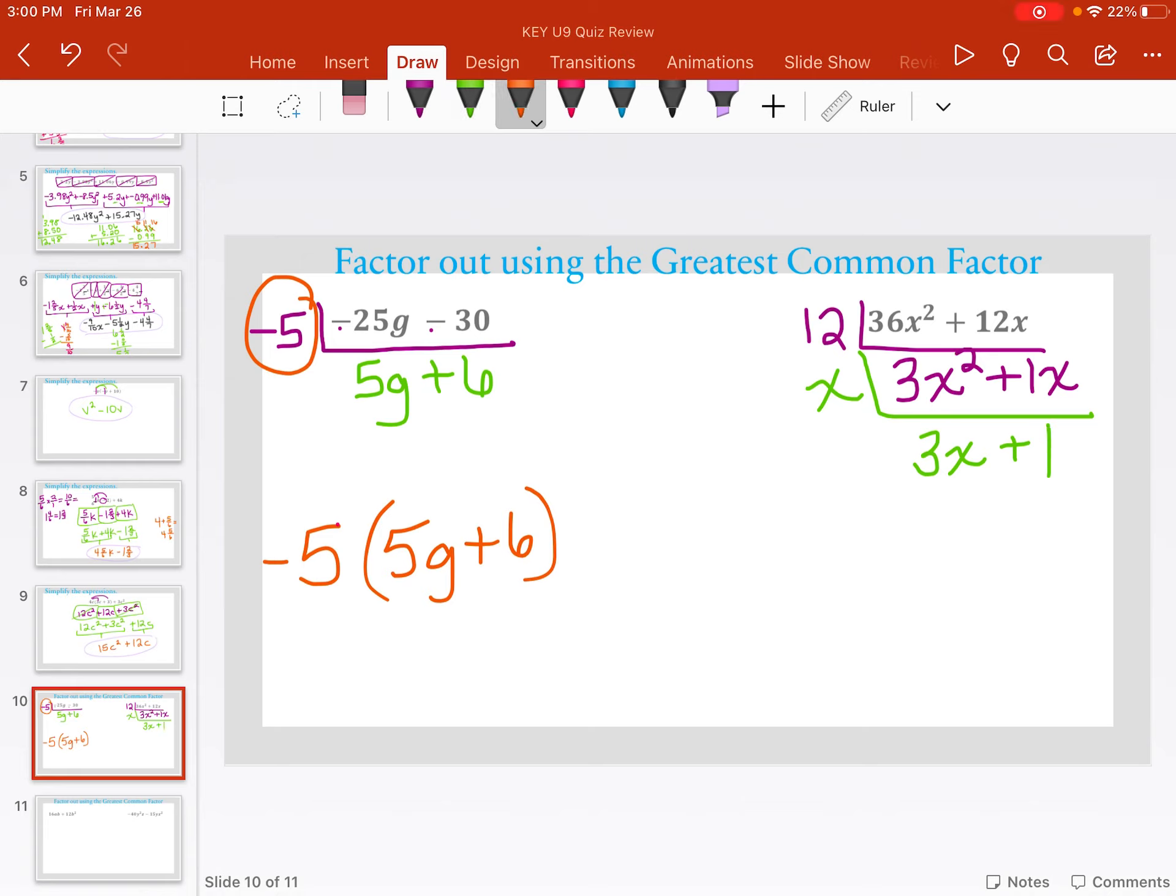Again, what's down here at the bottom now is what goes inside. So 3x plus 1 is inside my parentheses, and everything I pulled out is what goes outside. So 12x is what goes outside of my parentheses.